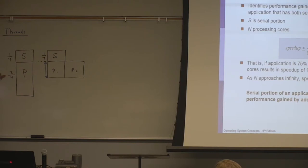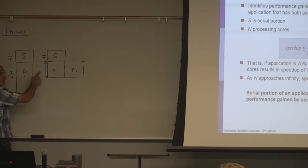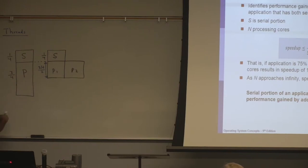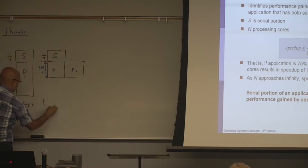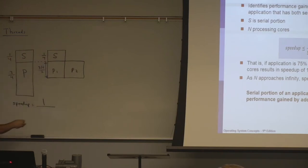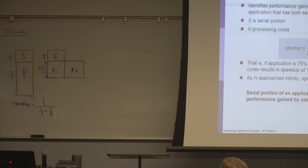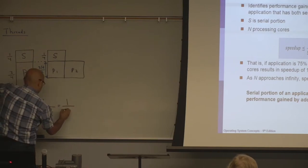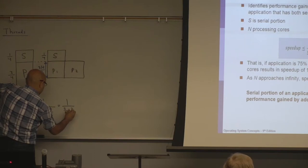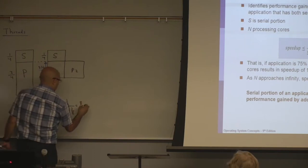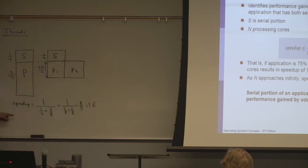This is three quarters of the program's time. If I divide it into two threads and execute them in parallel under perfect conditions, this would be three eighths — three over four divided by two. So my speedup is one divided by one quarter plus three eighths, which is one divided by two eighths plus three eighths, and this is eight over five, or 1.6.